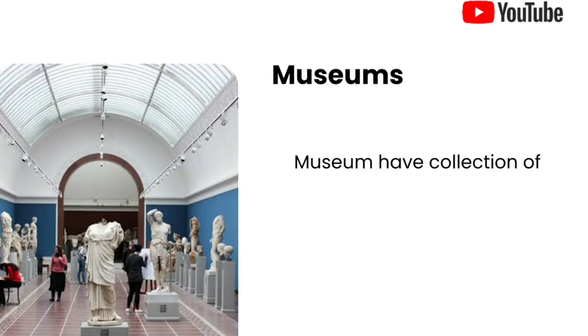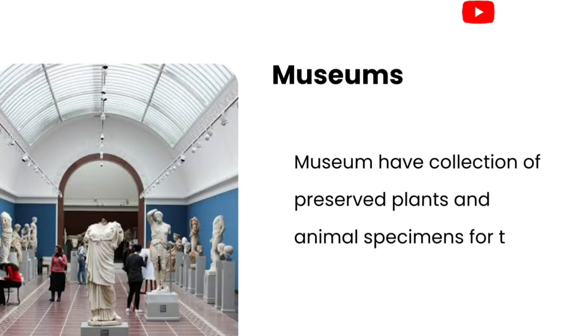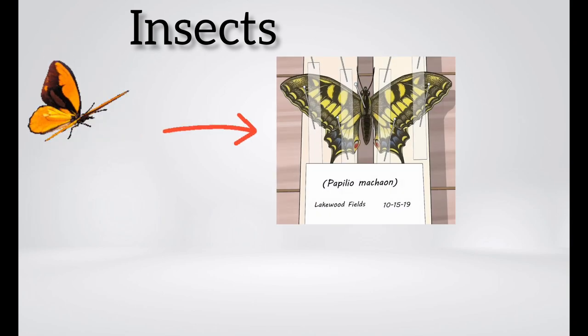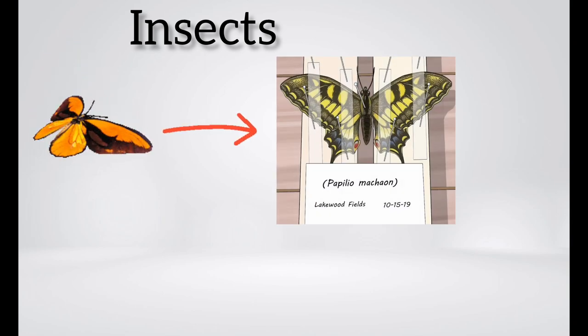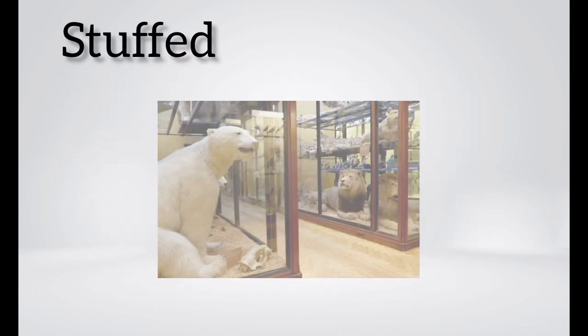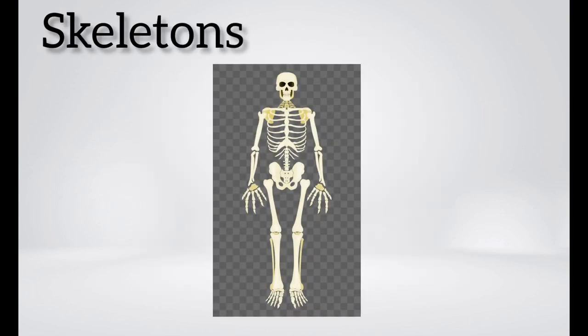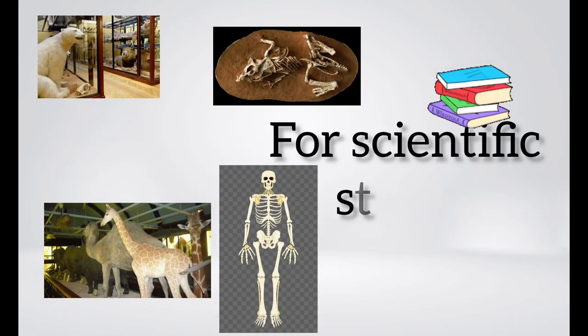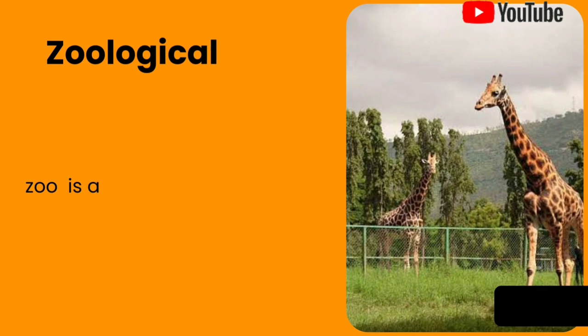Museums have collections of preserved plant and animal specimens for study and reference. For example, insects like butterflies are pinned on boards for taxonomic study. Large animals, stuffed animals, skeletons, and fossils are also kept in museums for scientific study.